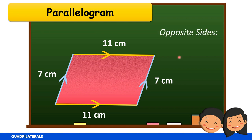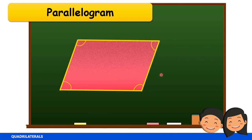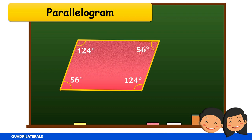A parallelogram has two pairs of opposite sides that are parallel and equal. Now let's talk about the angles in a parallelogram. Opposite angles are congruent — if this angle measures 124 degrees, the angle opposite it is also 124 degrees. If this angle measures 56 degrees, the angle opposite it is also 56 degrees. So in a parallelogram, opposite angles are equal.